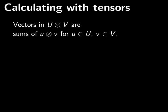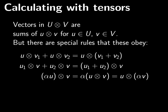A vector in U tensor V is just going to be a sum of little u's tensor little v's for U a vector in big U and V a vector in big V. And these symbols, U tensor V, well they're going to satisfy some properties. So if you have a vector U and a vector V1 and V2 in big V, then U tensor V1 plus U tensor V2 is U tensor the sum V1 plus V2.